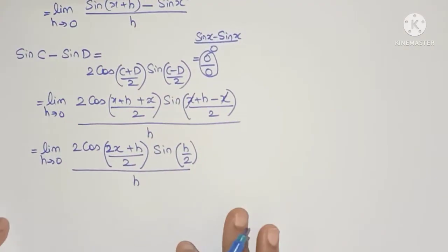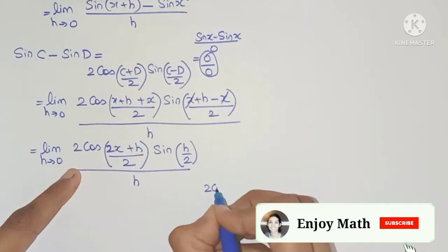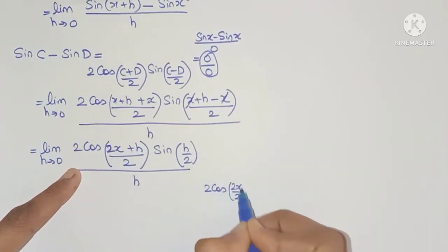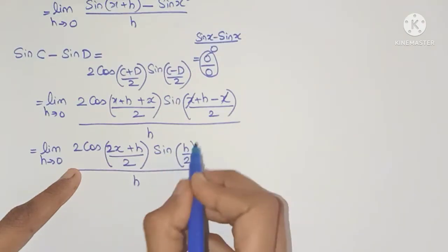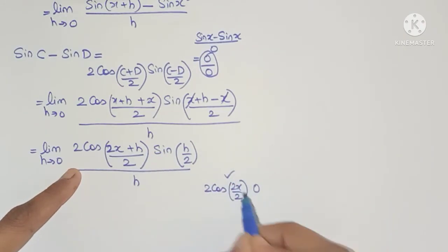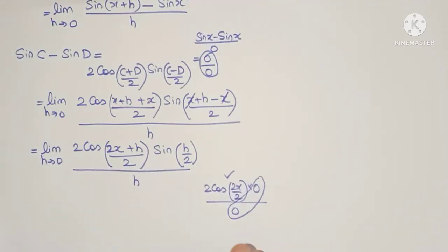Now let's try to apply the limit and see. I'll get 2 cos, and when h is 0 this will be 2x by 2. So this expression looks fine but look at this expression. This will become sin 0 which is 0 and the denominator will be again 0. So again I'm getting the 0 by 0 form. We need to find a way to remove this form.